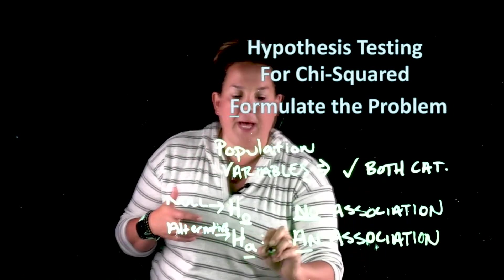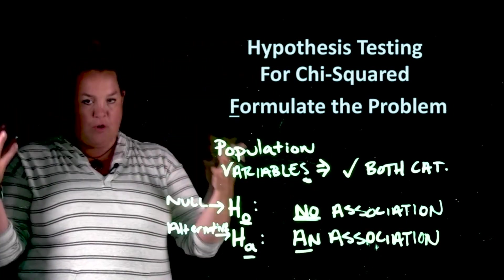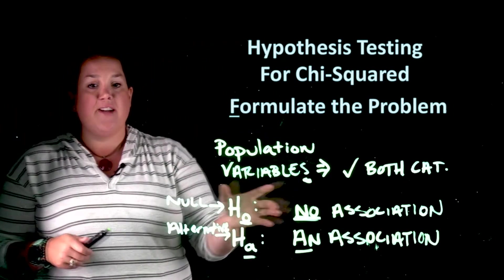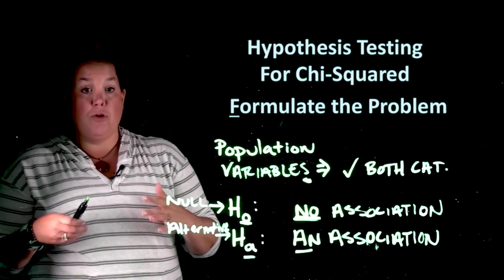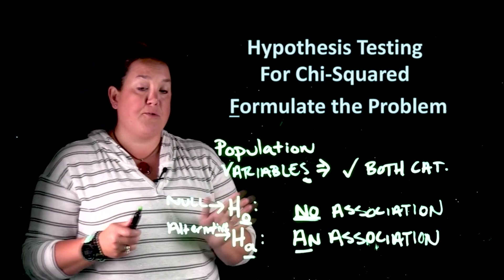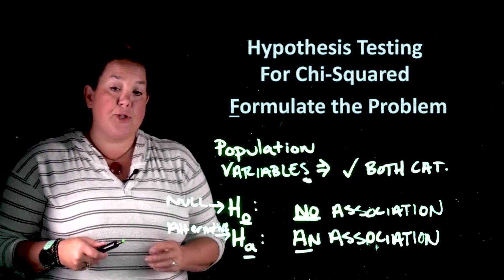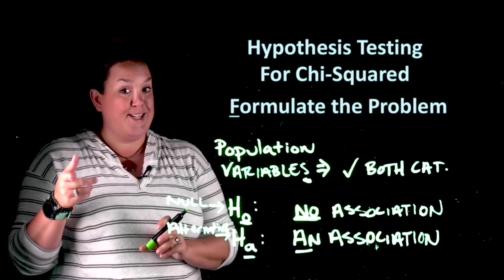And then H sub A is that there is an association. So that's how you can remember those two. So that's the first portion of hypothesis testing for chi-squared. Next, we're going to move into the review conditions. See you there.